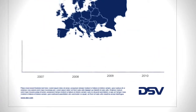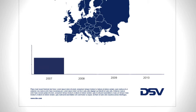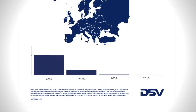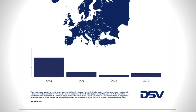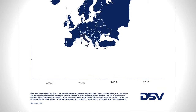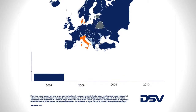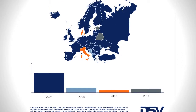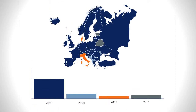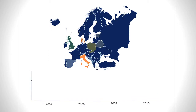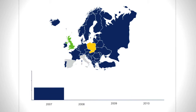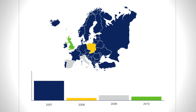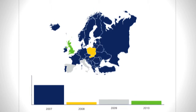We all know this blue color, DSV's primary color, but we also have a range of secondary colors that can be used to provide contrast for the primary color. If used in a subtle and careful way, they can actually help the primary color stand out and appear even stronger while making the layout more appealing.